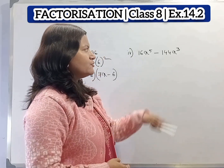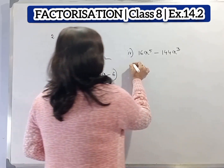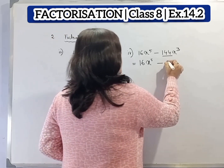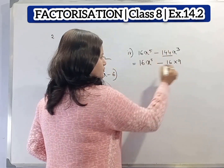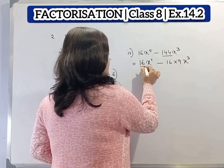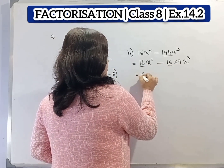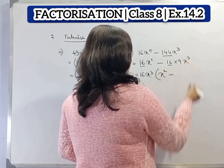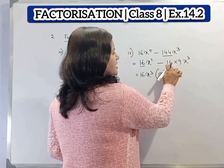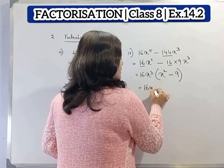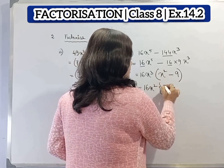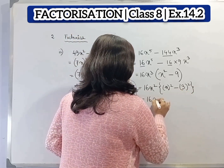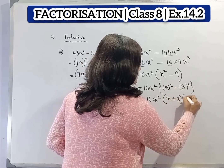Now question 4: 16x to the power 5 minus 144x cube. Now 144 is a multiple of 16 — 16 times 9 equals 144. From these two terms we can take 16x cube as common. After taking 16x cube as common, from the first term only x square is left, and from the second term only 9 is left. So we have 16x cube into x square minus 9, which is x square minus 3 square. Applying a square minus b square gives 16x cube into x plus 3 into x minus 3.